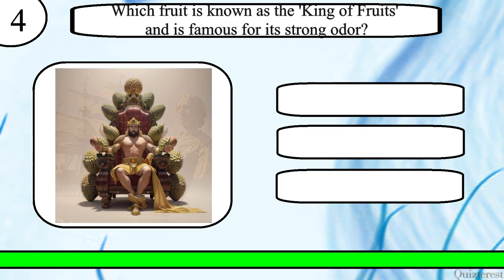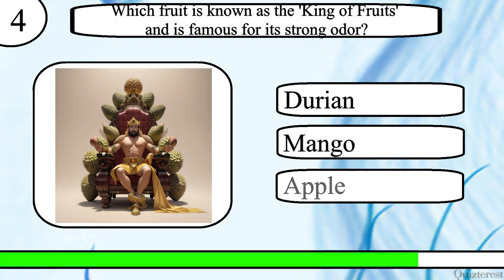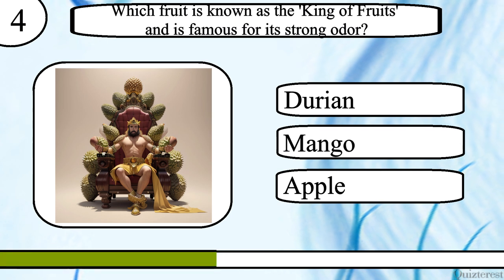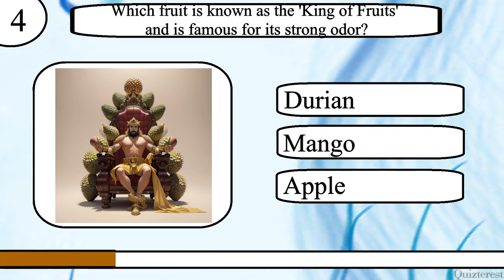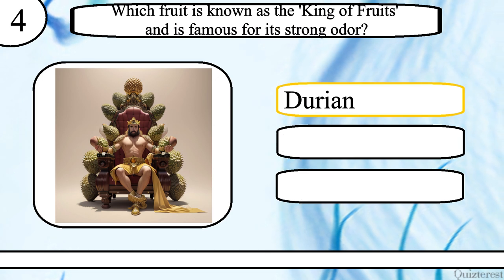Question 4. Which fruit is known as the king of fruits and is famous for its strong odour? Durian, mango or apple? The correct answer is Durian.